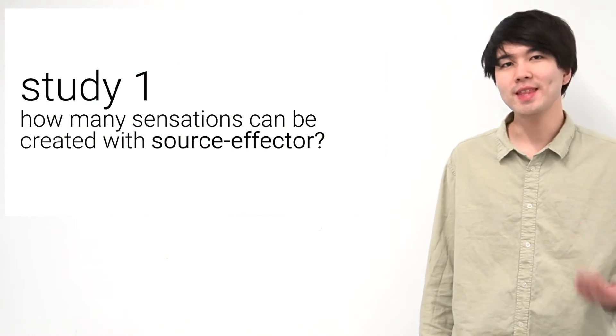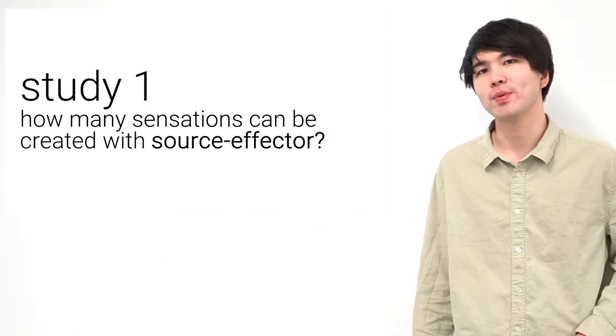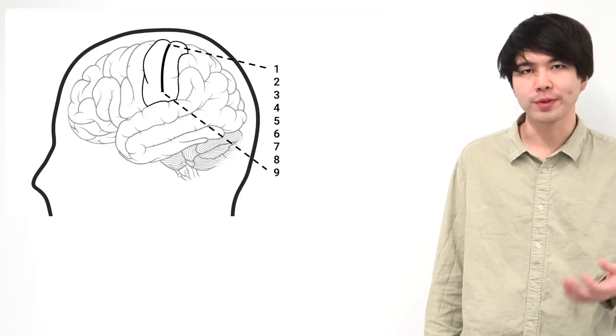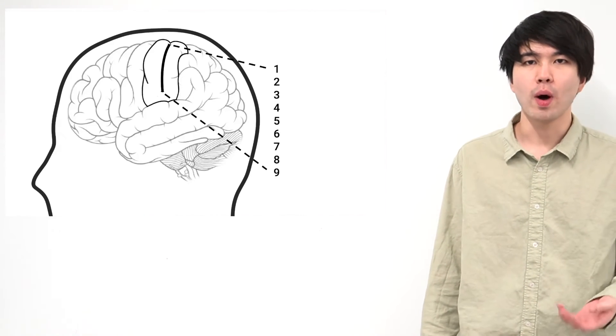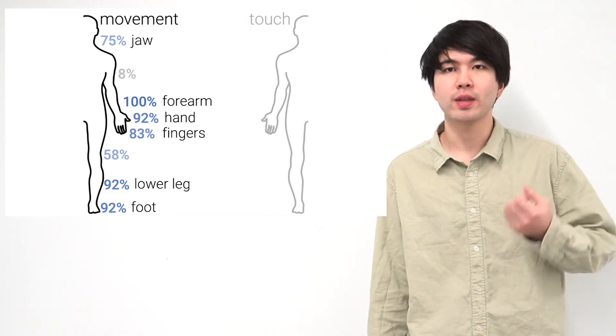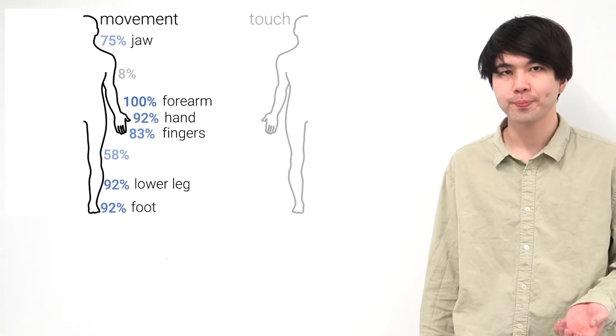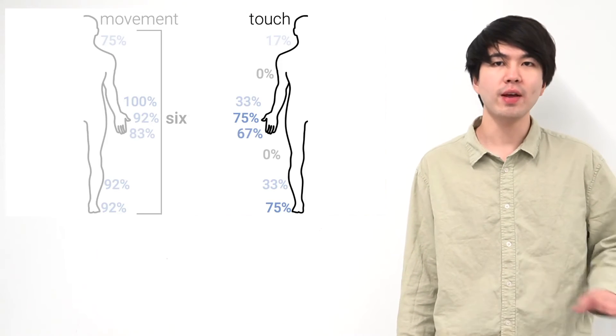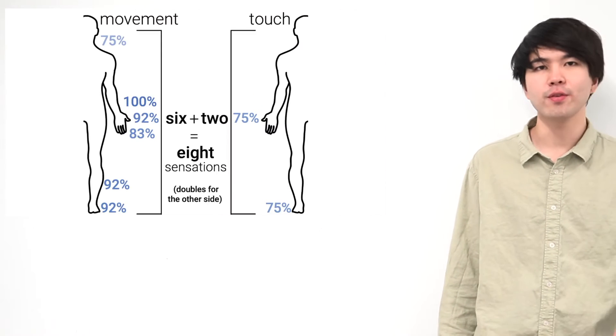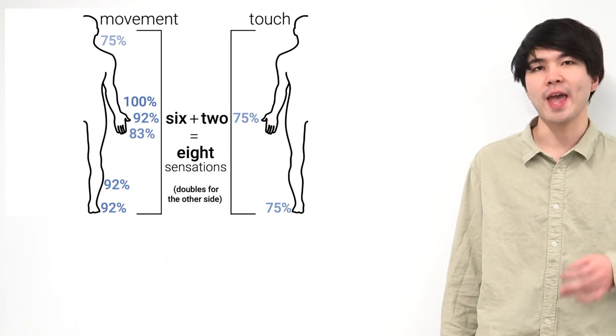So now, as you may be wondering, we indeed formalized what we just did and investigated how many different sensations our current implementation of source effector can create. So we defined nine points on participants' right side of the sensory motor cortex and stimulated each point while modulating the stimulation intensity. And what we found is that we observed participants' involuntary body movement, which is force feedback, occurred in these six regions, even including their jaw. We also found that participants felt touch sensations without any movement in two locations, which are hand and foot. So we observed a total of eight different sensations within one side of the body, which obviously doubles for the other side, so 16 sensations across the entire body in total.